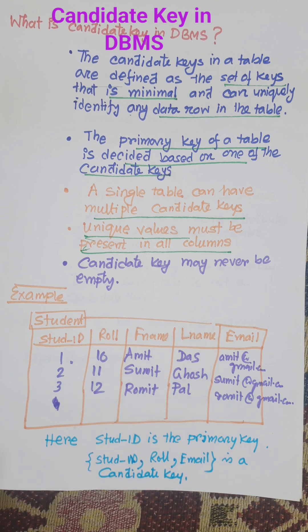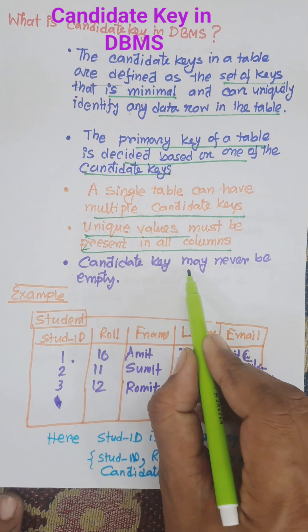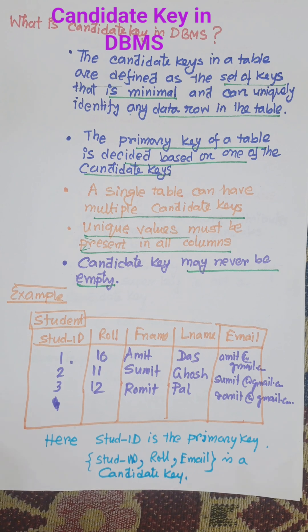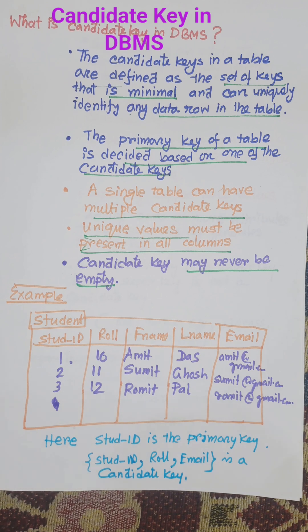Candidate key can never be empty, meaning it cannot be null — it is not possible to enter any attribute without a value. So candidate key is the minimum number of attributes used to uniquely identify a row in the table. Among them, one is definitely the primary key, and they must be unique and can never be empty.